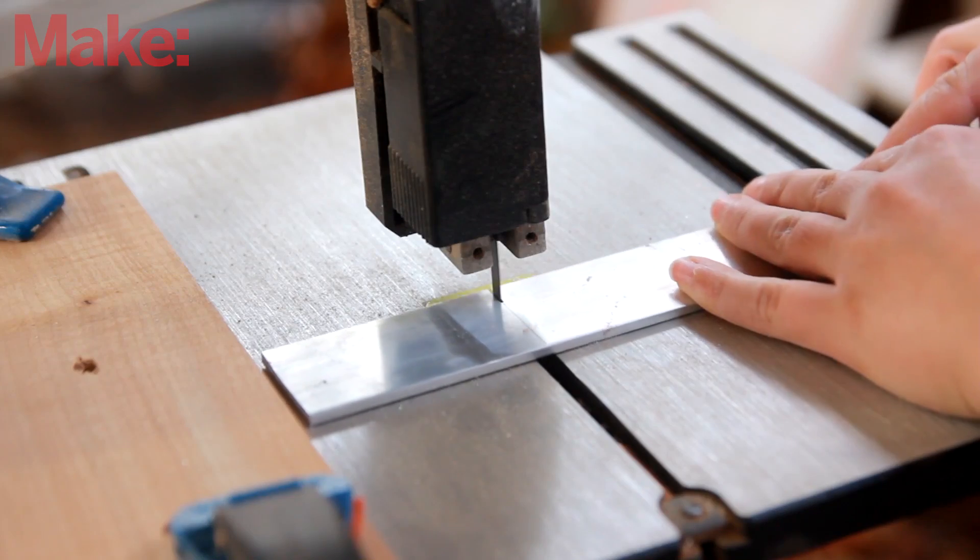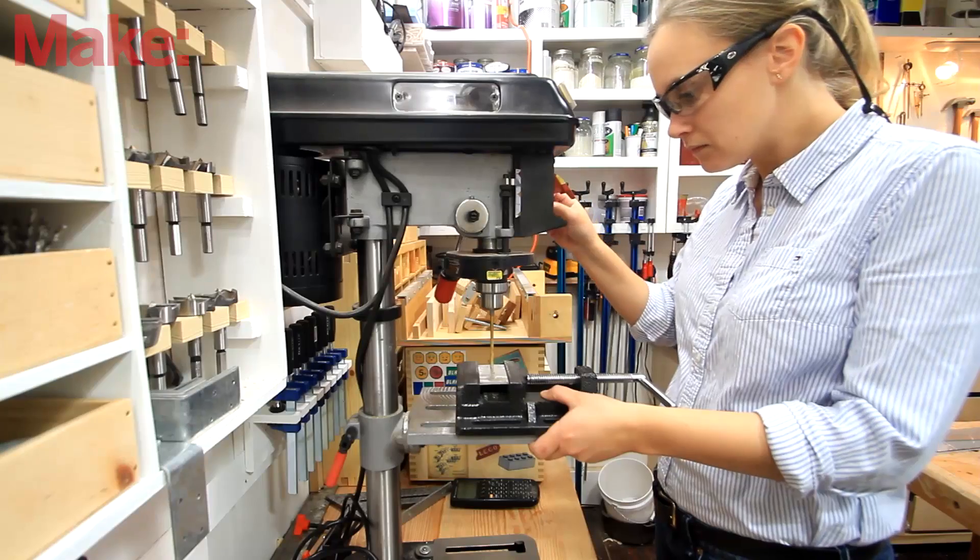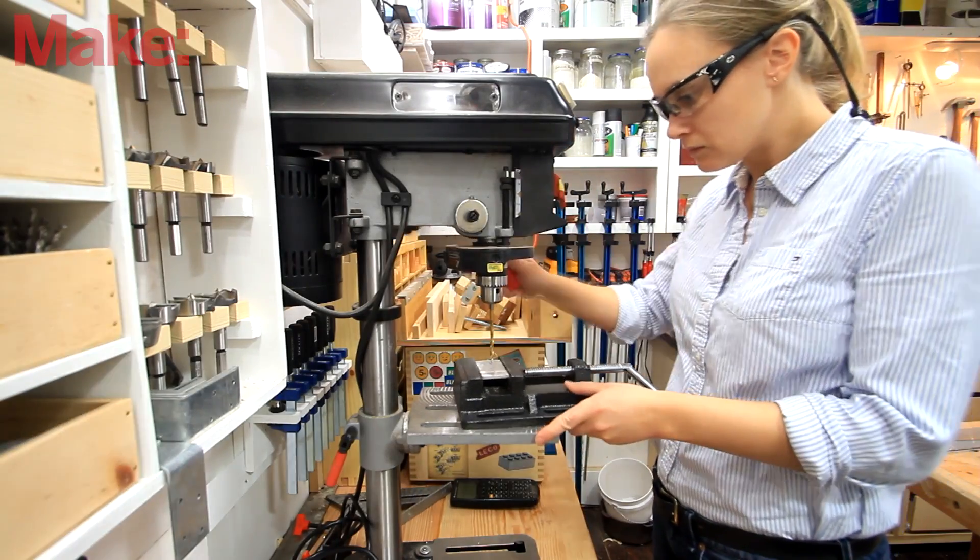So I'm starting with cutting up some 1.5 inch aluminum bars on the bandsaw, and then drilling holes in it with the drill press.